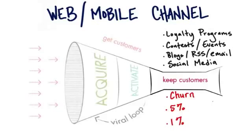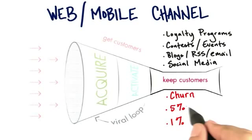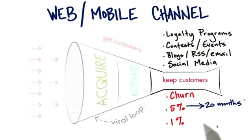Just think about it: with 5% attrition your average customer sticks around for about 20 months, but with 1% attrition they stick around for 100 months. You get 5 times more revenue from the same customers just by working on keeping them around.